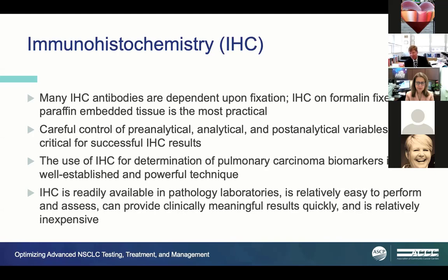In non-small cell lung cancer, immunohistochemistry is used not only for diagnosis of the specific type of lung cancer in many cases, but it's vital for our biomarker testing. IHC is well-established and is a very powerful method. From the pathologist's and laboratory's point of view, it's readily available, relatively easy to perform, easy to assess, gives quick results with meaningful clinical information, and doesn't break the bank. It checks a lot of boxes, which is why in our world of next-gen sequencing, IHC remains a robust method.